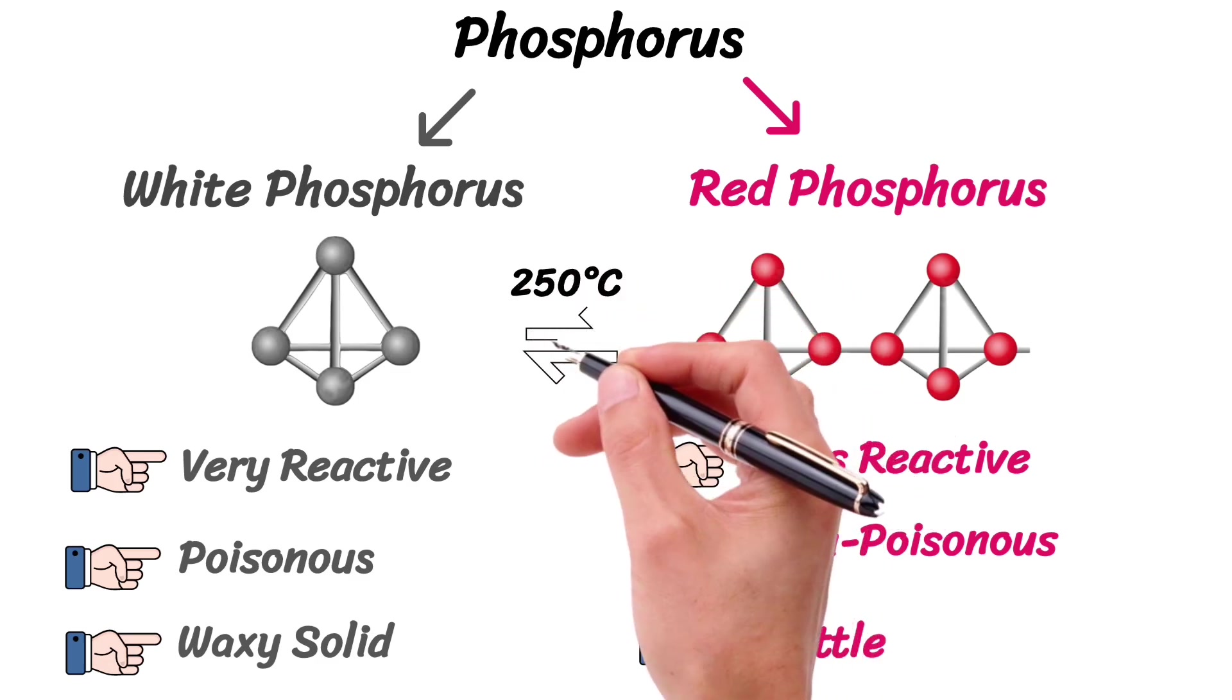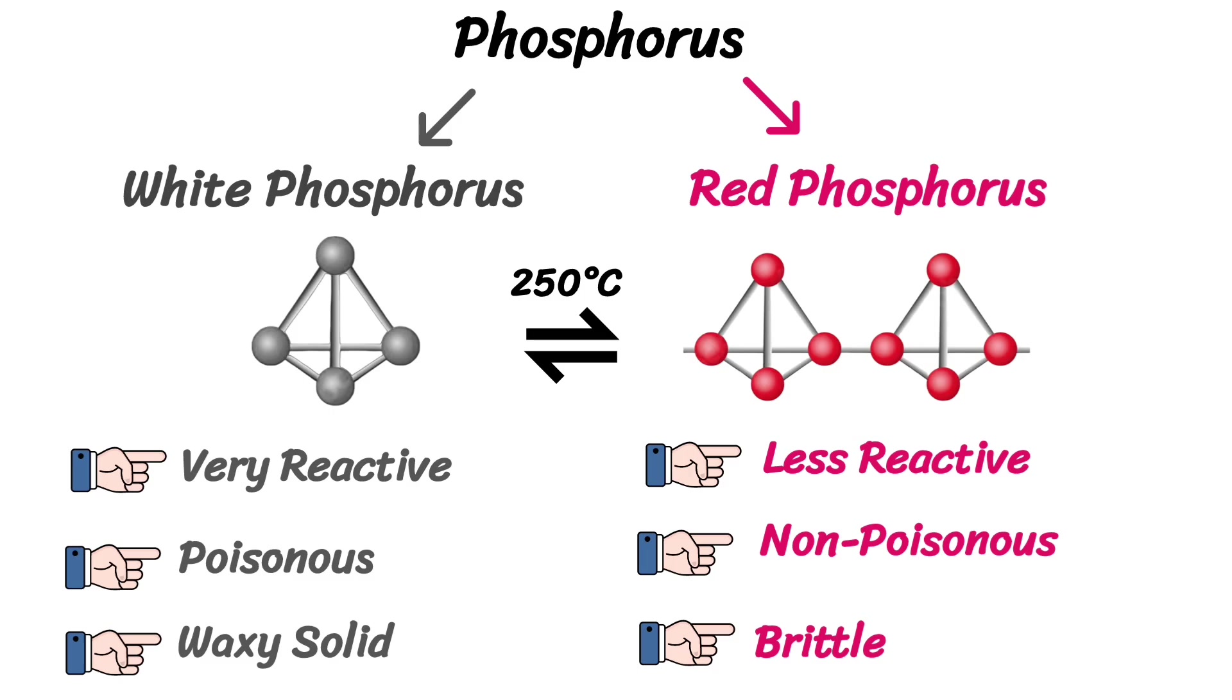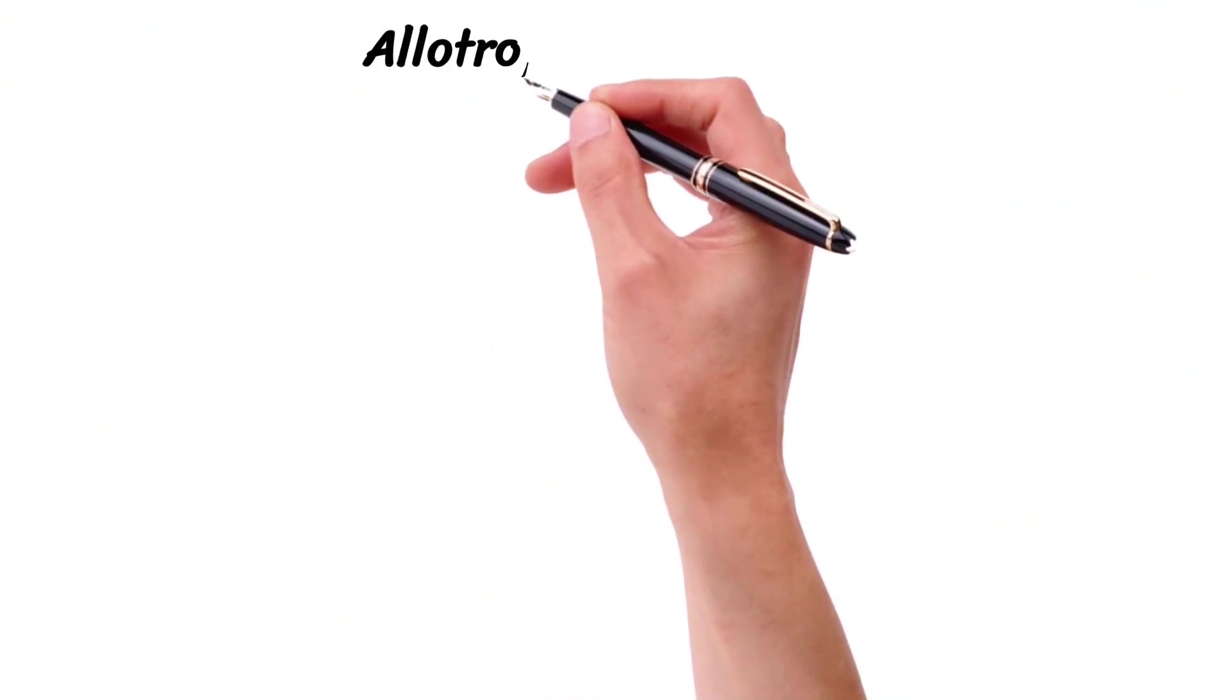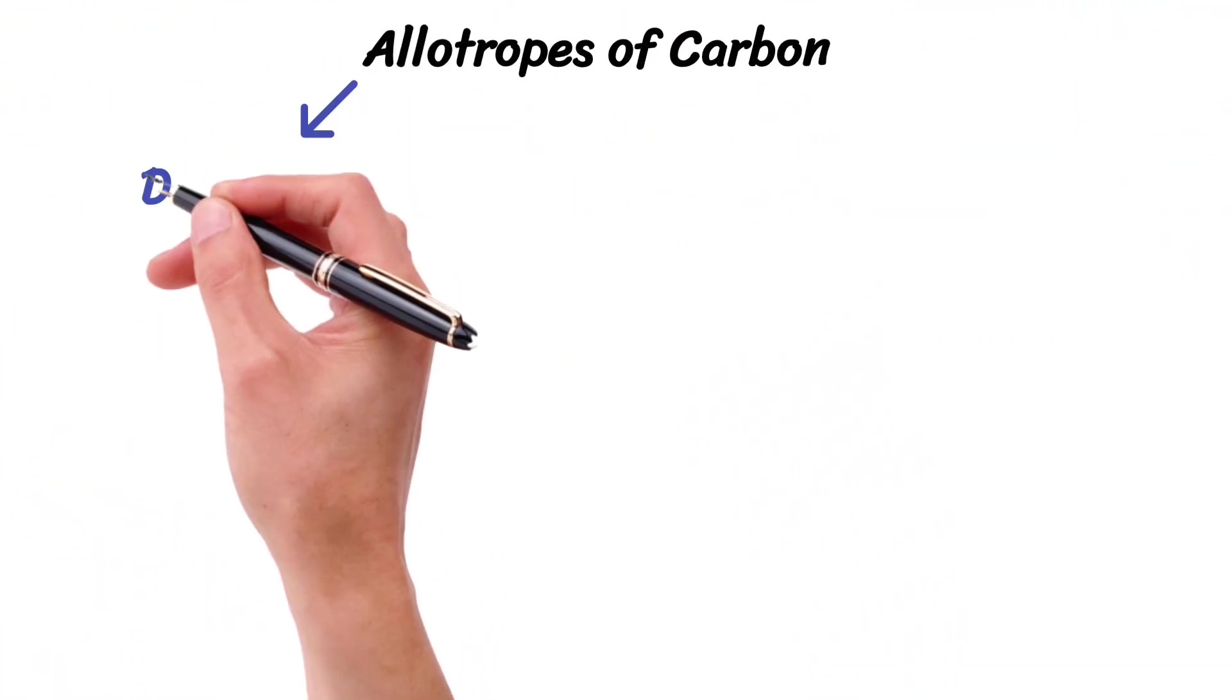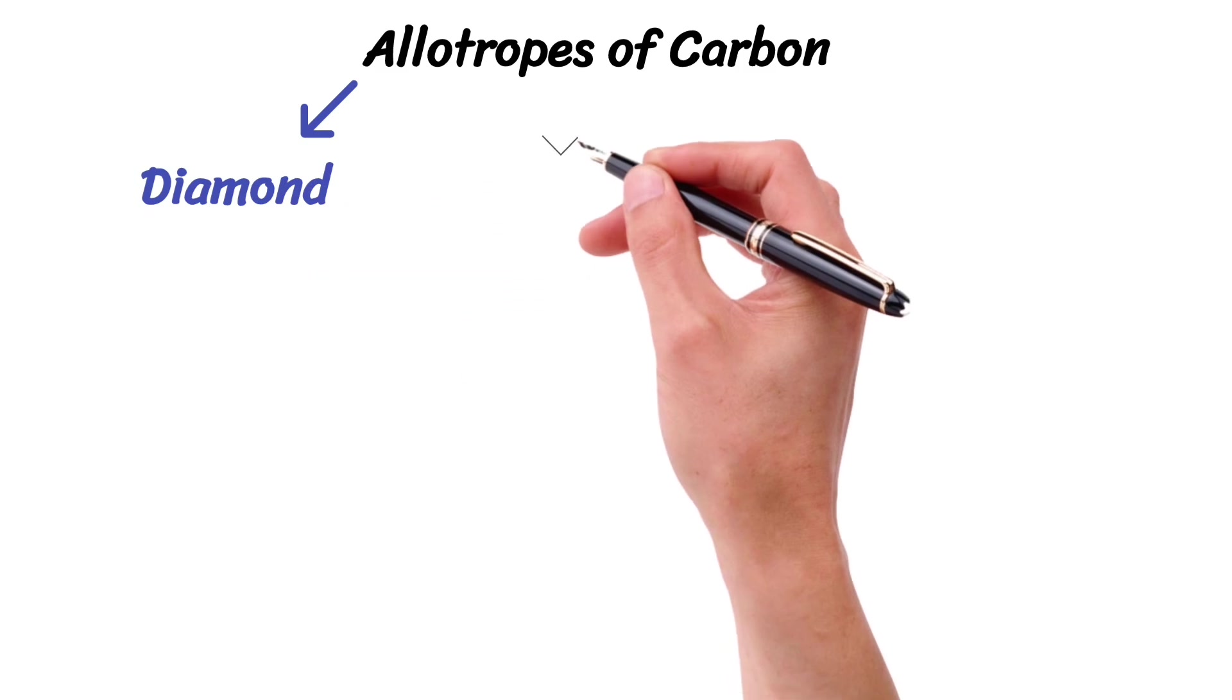At this temperature, white phosphorus is converted into red phosphorus. Let me teach you some allotropes of carbon. Carbon exists in three main allotropic forms: diamond, graphite, and buckminsterfullerene.